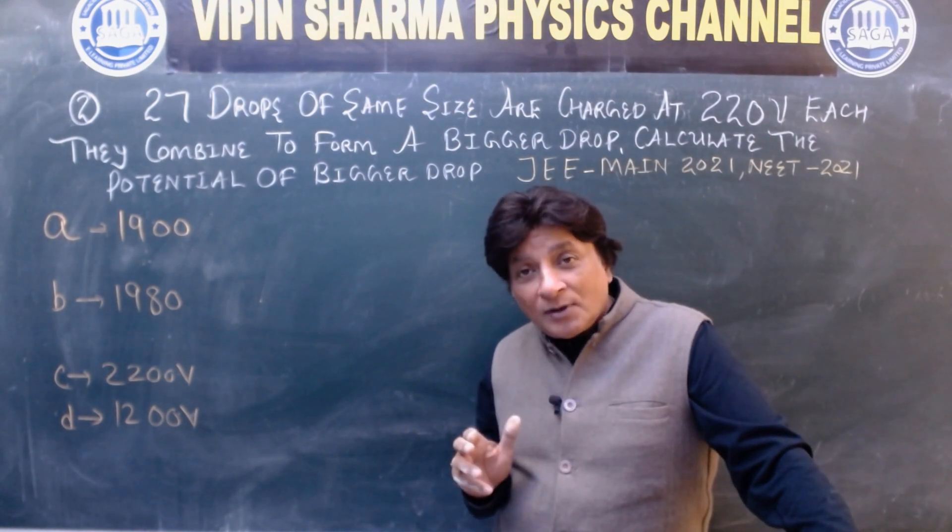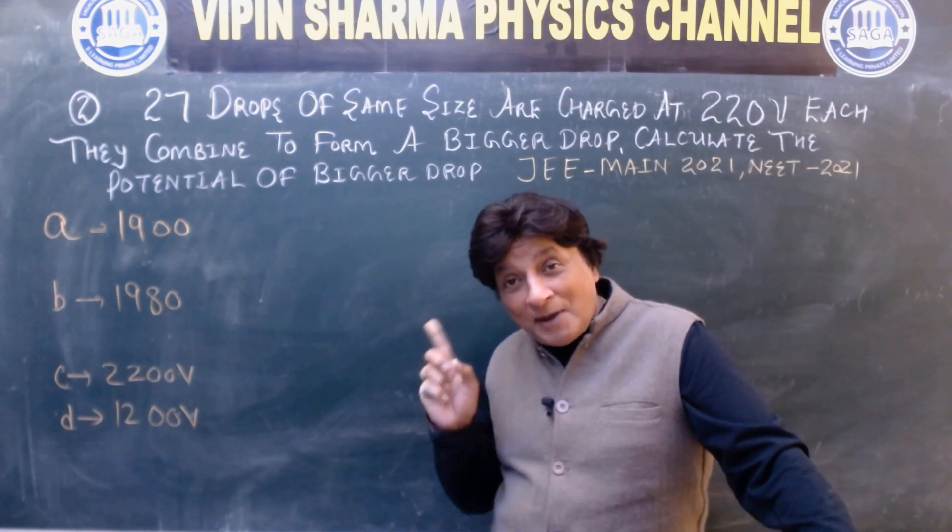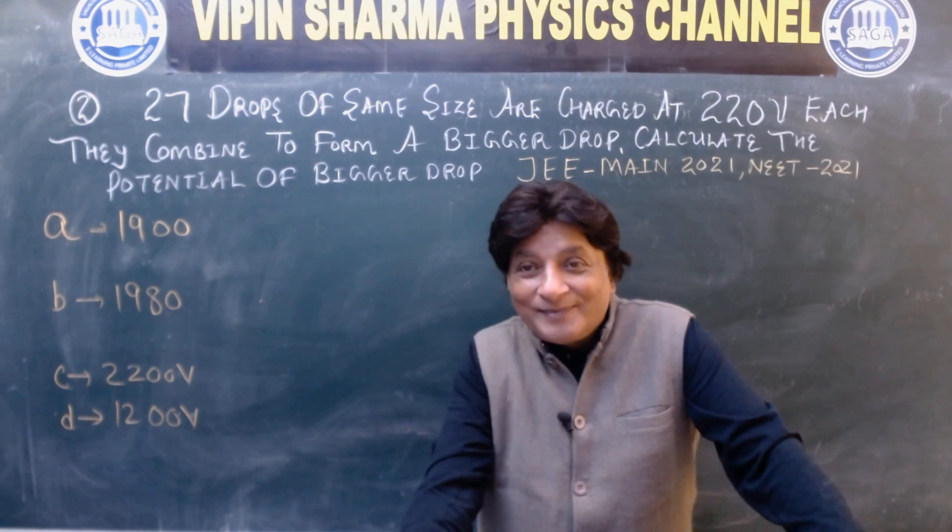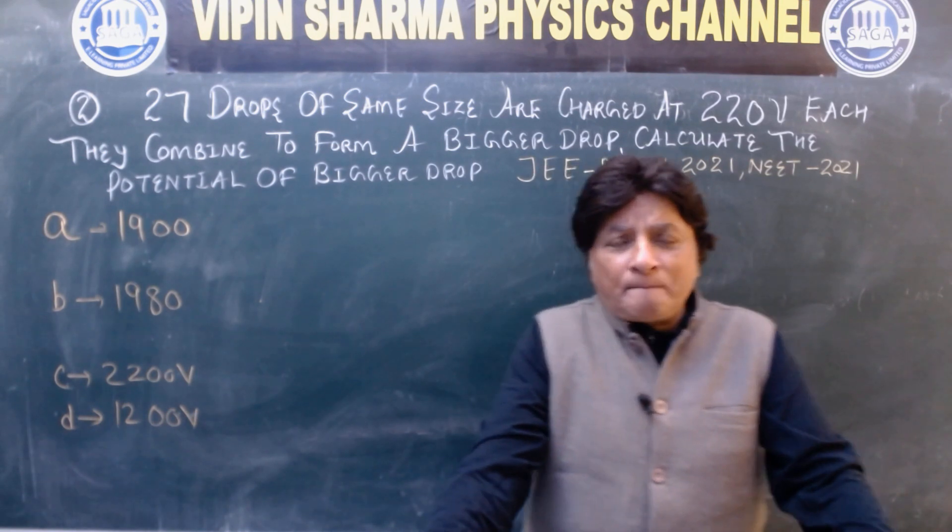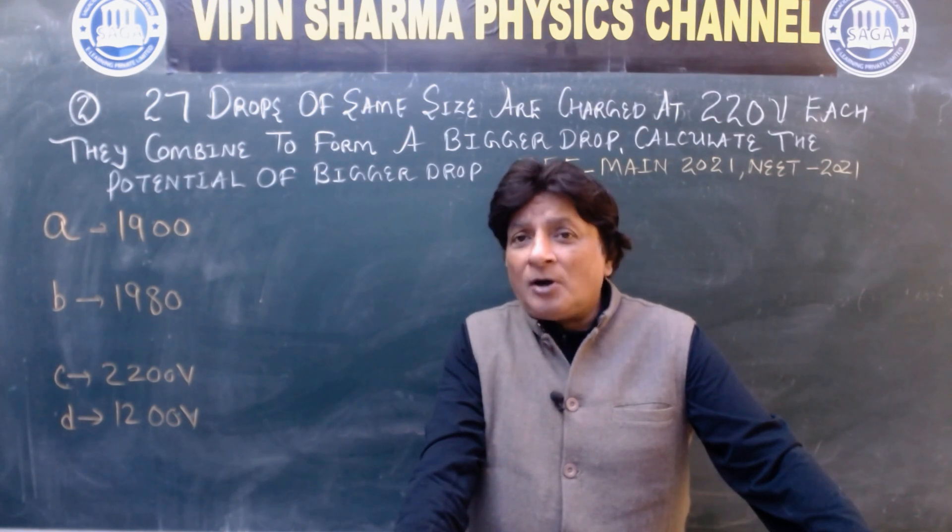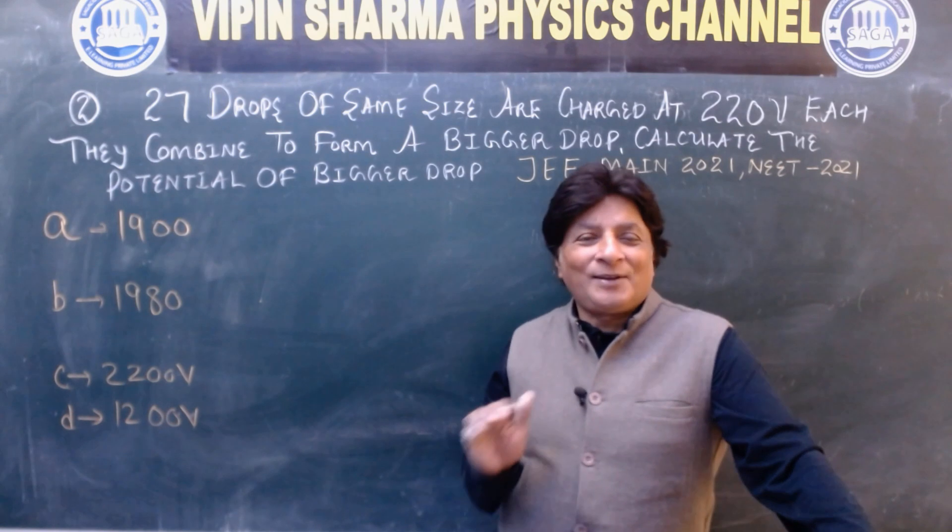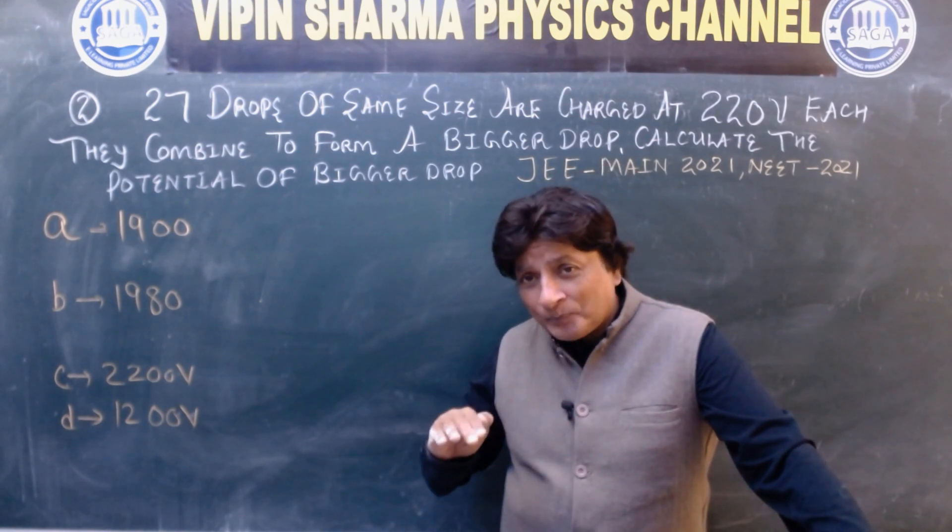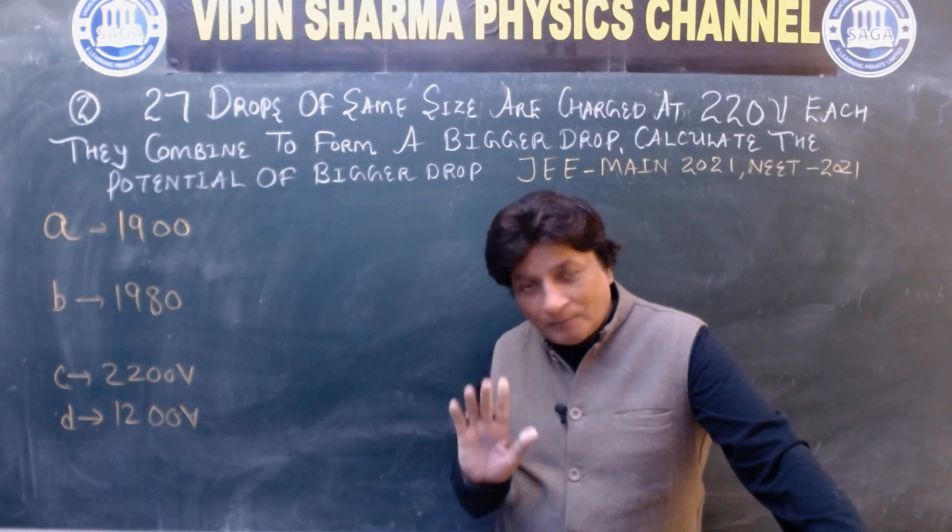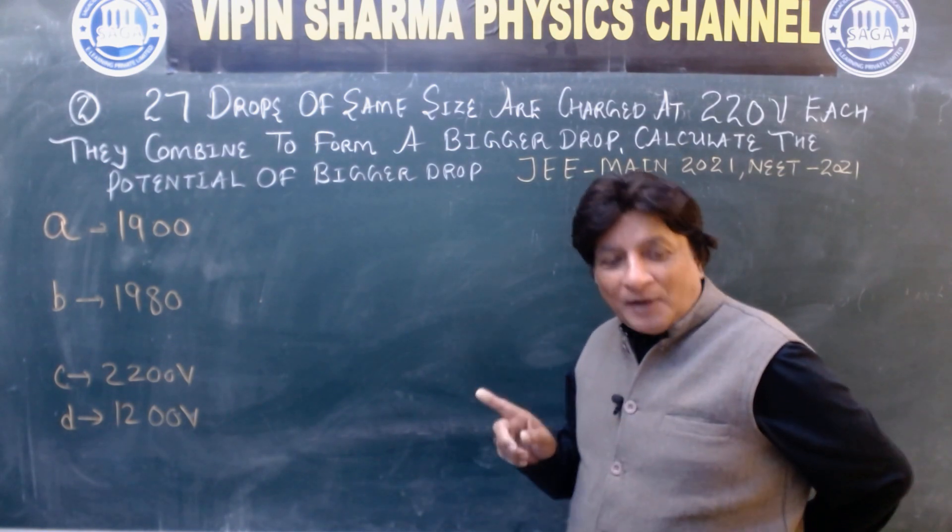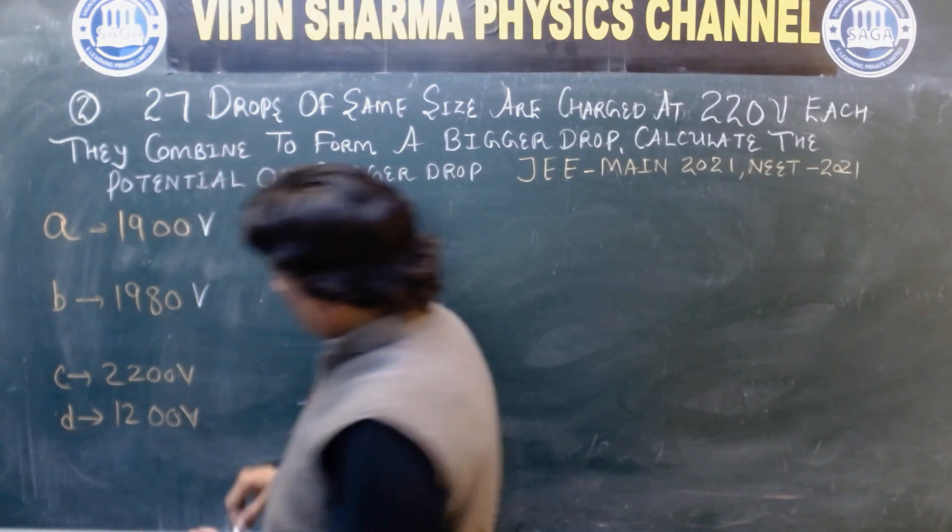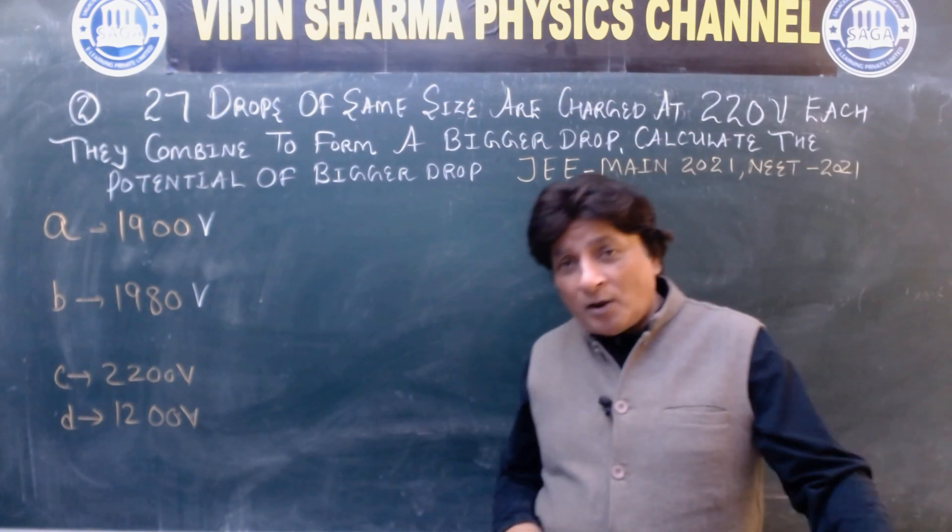This question is from JEE Main 2021 and NEET 2021. Some people think that JEE Main preparation and NEET preparation are separate. This question proves in many ways that they are not. The level is similar. Options are: 1900 volt, 1980 volt, 2200 volt, 1200 volt.